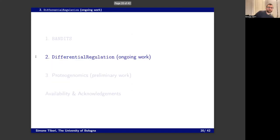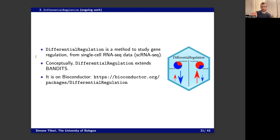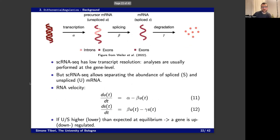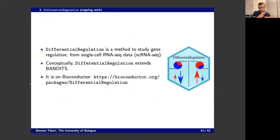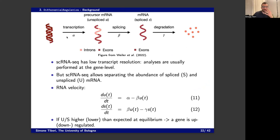Now I'll go through another package we've developed — not yet published, but with a preprint coming. Conceptually it's very similar to BANDITS but extends it. It's called the differential regulation package. It takes the idea of BANDITS and applies it to single-cell data — and also bulk later — for a different kind of biological analysis, requiring some modifications. The mathematical model is similar but slightly extended.